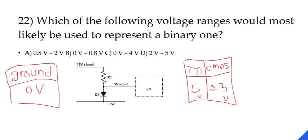Question number 22. So what do we have here? Which of the following voltage ranges are most likely to be used to represent a binary one?